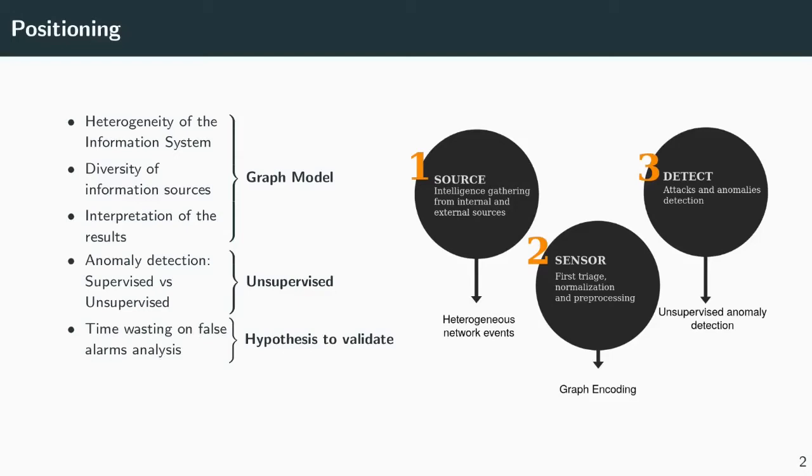To summarize our contribution, in our approach named Sec2Graph, we propose to encode heterogeneous network events in a graph to better detect anomalies using an unsupervised approach. In the following, I will describe each step of Sec2Graph's workflow, then I will show you our experimental setups and present results. I will conclude with a summary of our contributions and proposed future work.